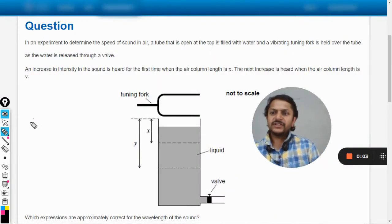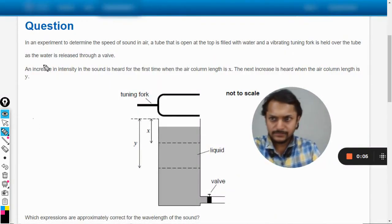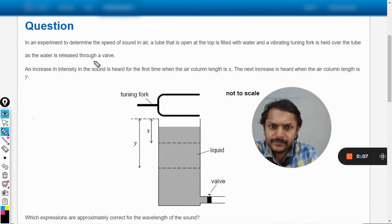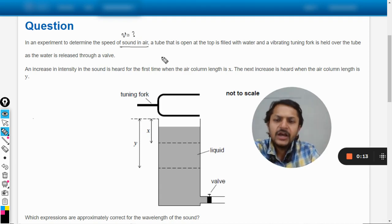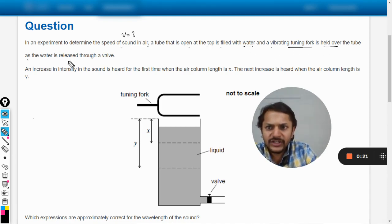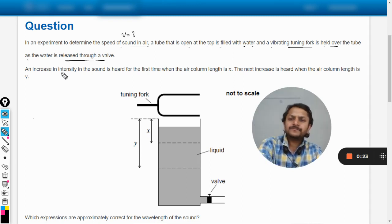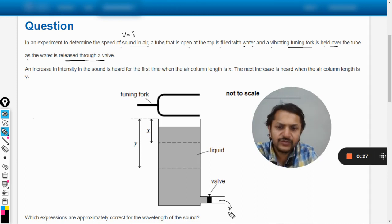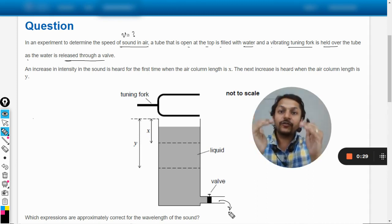Okay, dear students, let us see what is there in this question. In an experiment to determine the speed of sound in air, a tube that is open at the top is filled with water and a vibrating tuning fork is held over the tube. As the water is released through a valve, the level is falling.